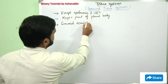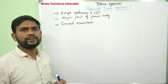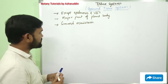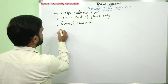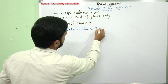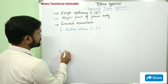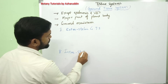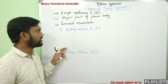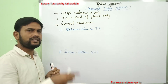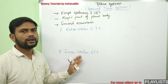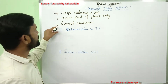These ground tissues originate from ground meristem. They are differentiated into two types: the first one is extrastelar or ground tissue system, and the second one is intrastelar or ground tissue system. Such variation is not found in monocot stems, where scattered vascular bundles are present, so there is no differentiation into extrastelar and intrastelar ground tissue systems.